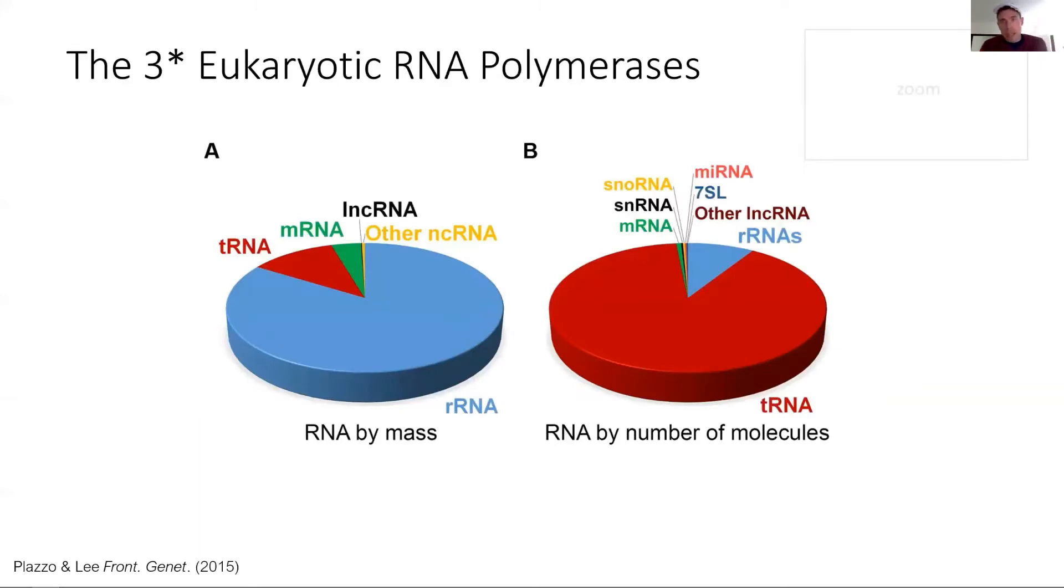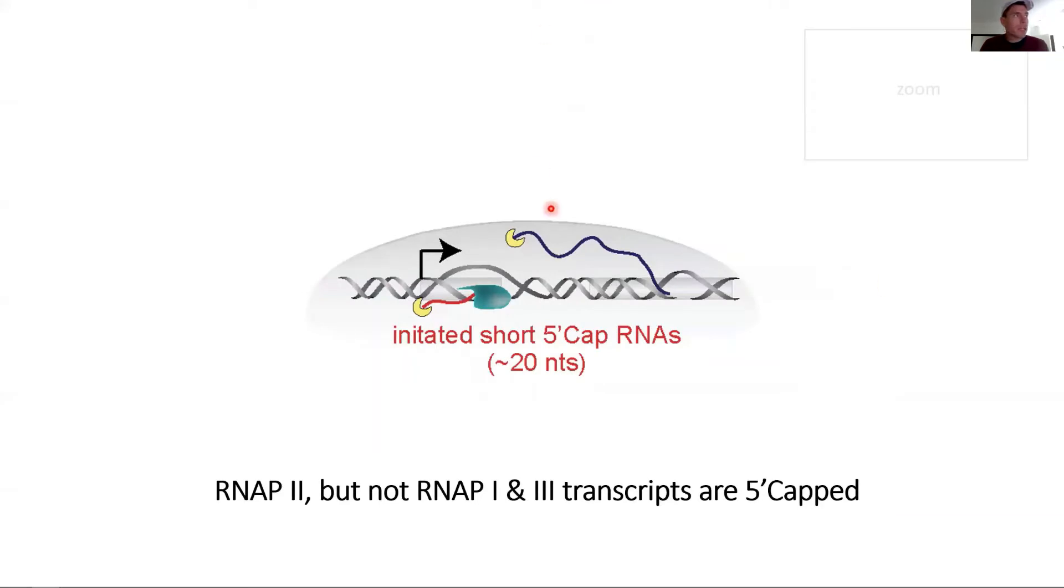When we talk about gene regulation, we're interested usually in polymerase II. There are three different eukaryotic polymerases. As seen here, Pol II with the mRNAs and a part of non-coding RNAs, whether it's by mass or by sheer number—blue for Pol I, red for Pol III—Pol II is vastly in the minority.